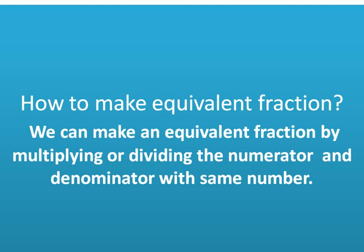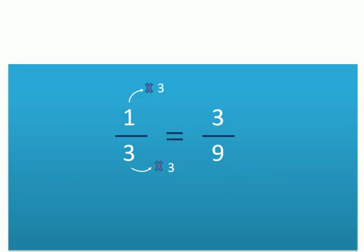To make an equivalent fraction, we multiply or divide the numerator and denominator by the same number. This number can be 2, 3, 4, or any other number of your choice.